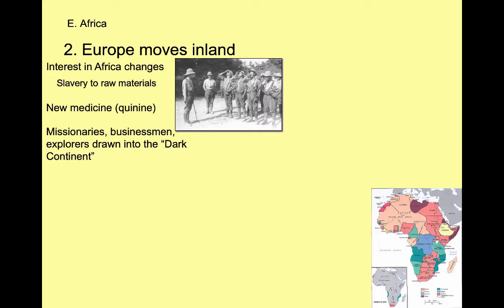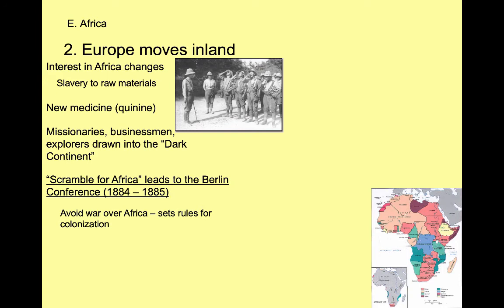Another thing driving the Europeans into Africa is the 'white man's burden' — the idea that white people had a responsibility to go spread their culture and religion to the, quote unquote, lesser peoples of the world. So we're going to see missionaries go into Africa to try to spread Christianity, mostly Protestant but also some Catholic. This all leads to what's called the scramble for Africa. As Europeans had this whole continent open up to them, competition might have led to European wars as one nation tried to get big chunks of Africa.